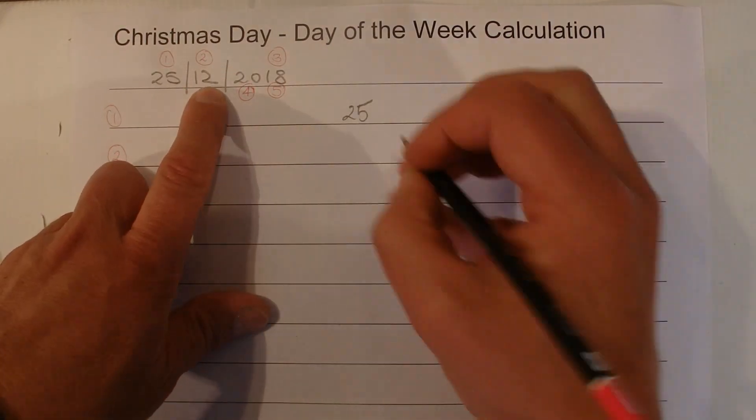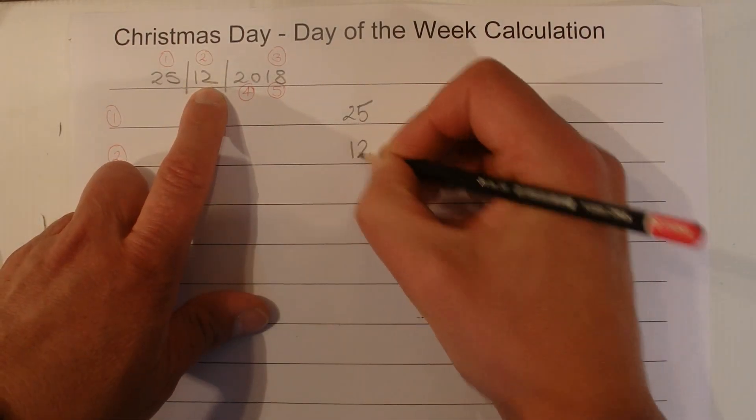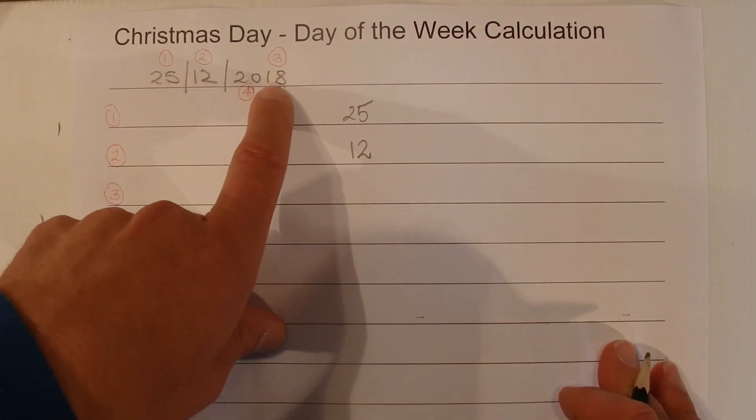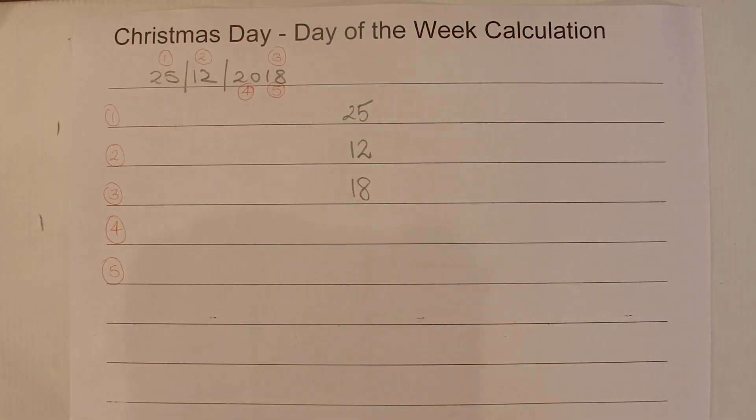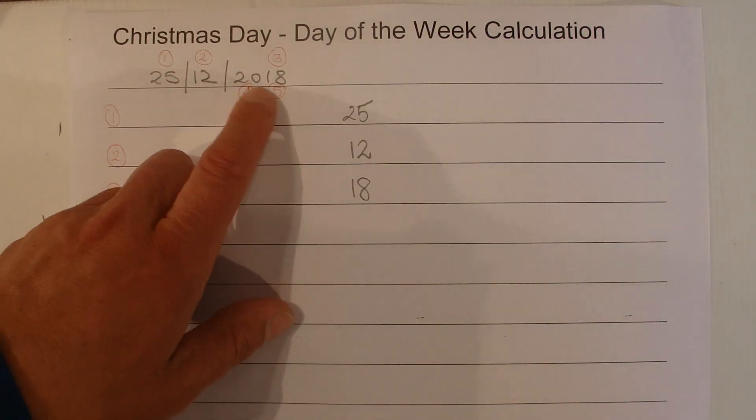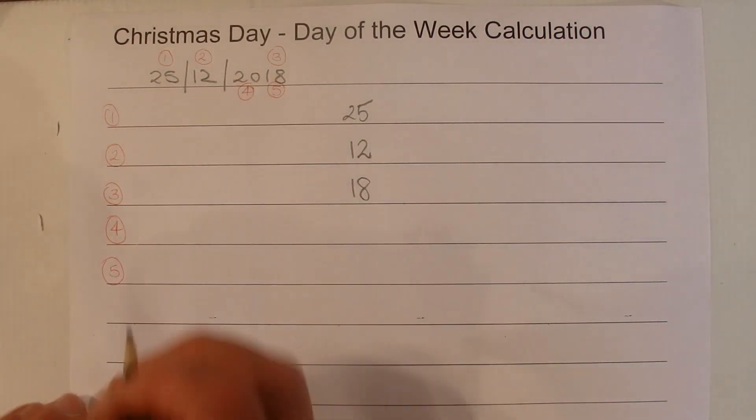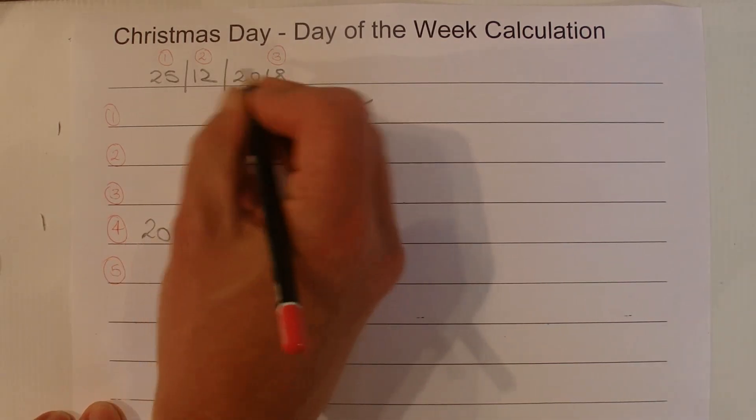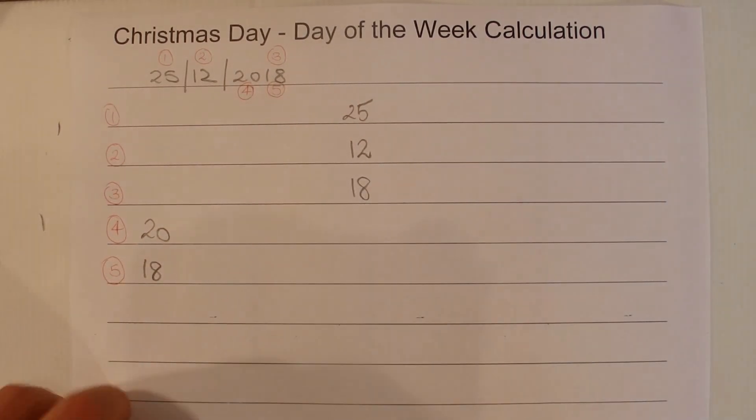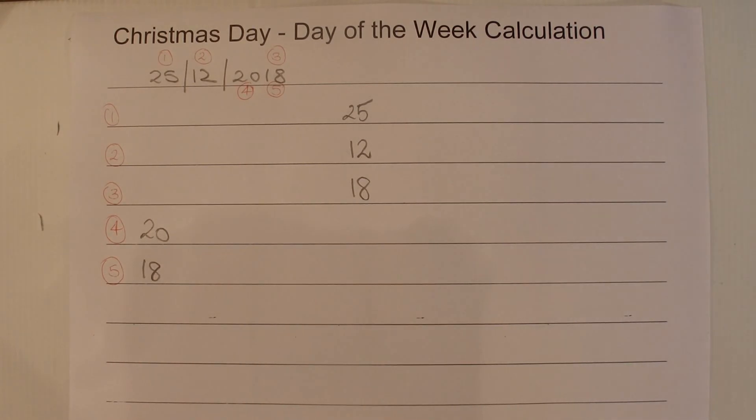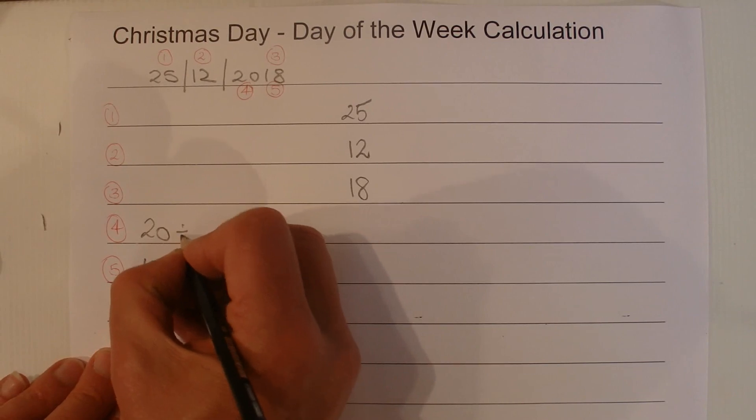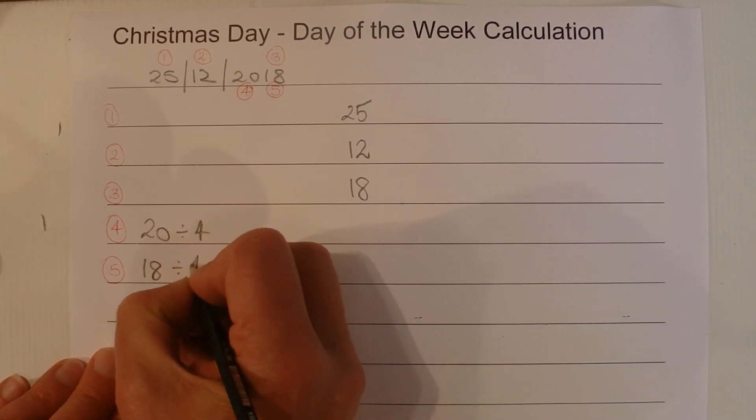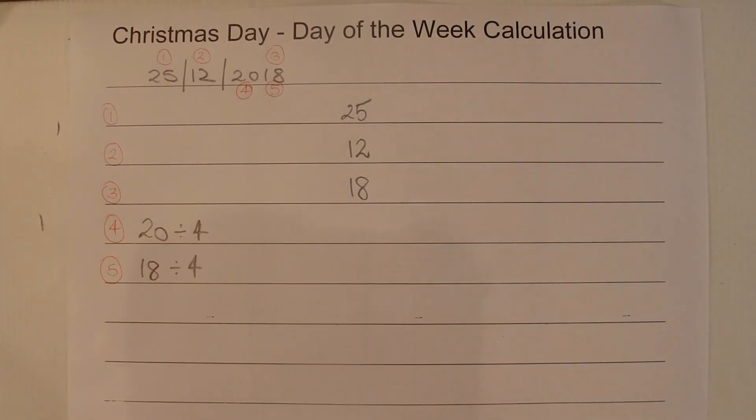And the second one is we pick up the 12th, 25th of the 12th, and then the third step is we pick up the year, which is the 18. And the fourth and the fifth step is we use the 20 and then again the 18 to calculate a number to be used in this final sum. And both the 20 and the 18, we divide those numbers by 4.